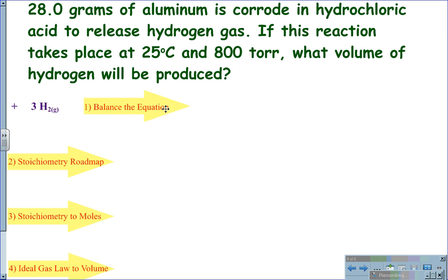We still begin with a balanced chemical equation. And in this case, two molecules of aluminum corrode in six molecules of hydrochloric acid to form two molecules of aluminum chloride and three molecules of hydrogen gas H2, since it is diatomic.